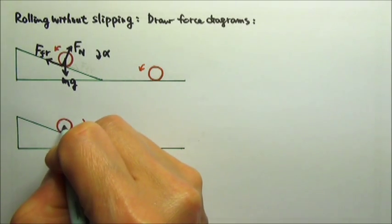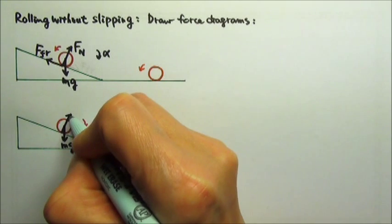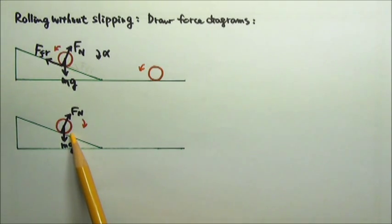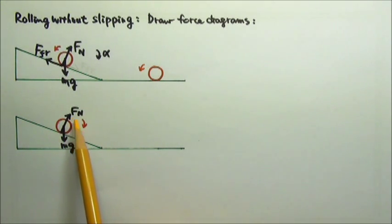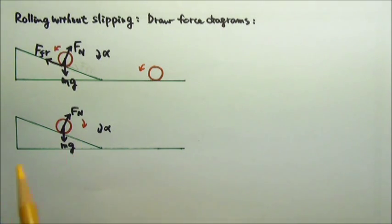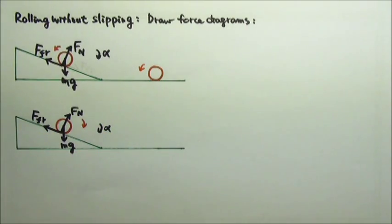Now let's look at the force diagram for the sphere rolling down the incline. mg acts at the center of mass; normal force starts from the contact point perpendicular to the incline. Which way does friction go? When the sphere rolls down the incline, it rolls in a clockwise direction and picks up speed, so its angular acceleration should be clockwise. The sphere also has a tendency to slide down the incline due to mg sine theta, so friction goes up the incline, producing a clockwise torque which gives the clockwise angular acceleration.